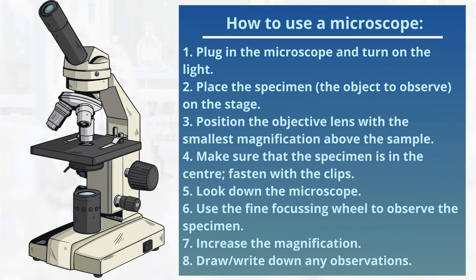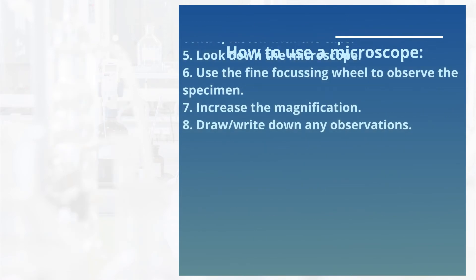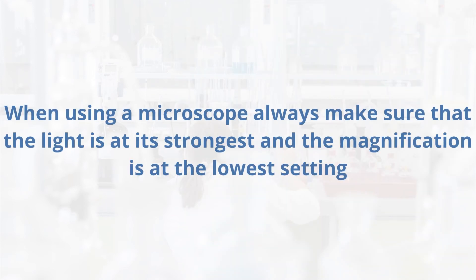So let's look at how to use a microscope safely. Number one, we plug it in and turn on the light. Number two, we place the specimen — that's the object we want to observe — onto the stage. We position the objective lens with the smallest magnification above the sample. Make sure that the specimen is in the centre and fasten with the clips. Look down the microscope. Use the fine focusing wheel to observe the specimen. Increase the magnification and draw and write down any observations. When using a microscope, always make sure that the light is at its strongest and the magnification is at its lowest setting.